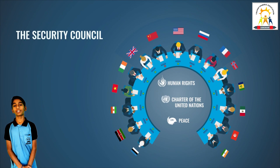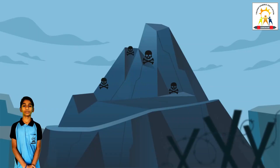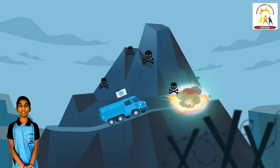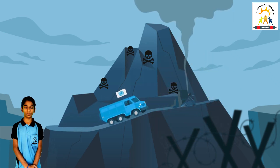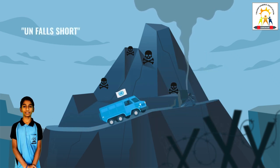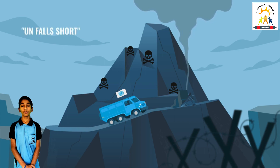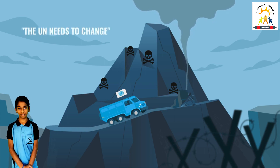The Economic and Social Council deals with social, economic, and environmental issues and other development matters. It has 54 members selected by the General Assembly for a period of 3 years.